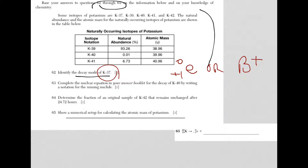Let's look at question 63. Complete a nuclear equation in your answer booklet for the decay of potassium-40 by writing a notation for the missing nuclide. What I did was I put what you would see on the answer sheet here at the bottom. So what you need to do is fill it in.